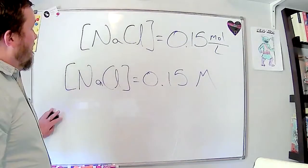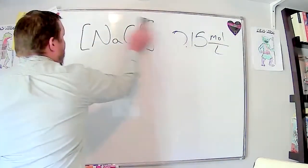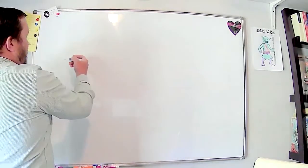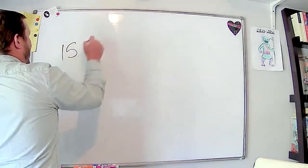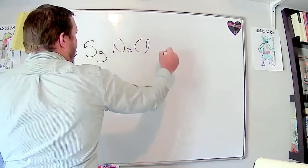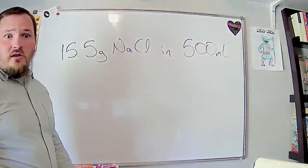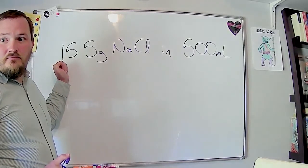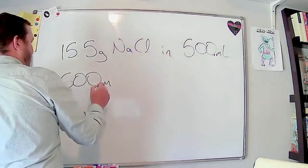Let's do a quick example. Let's calculate the concentration of sodium chloride. Say we're making pasta and you salt the water — you put 15.5 grams of NaCl into 500 milliliters of water. How would we figure out our molarity of sodium chloride? We'd have to convert the 500 milliliters to liters first. So 500 milliliters — and let's say it's three sig figs — every 1000 milliliters is one liter.